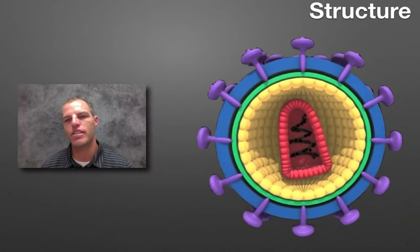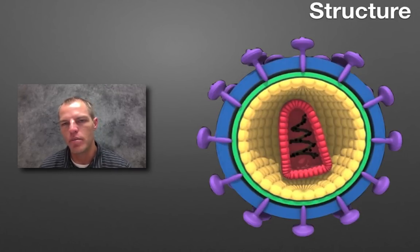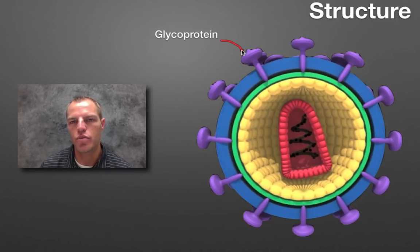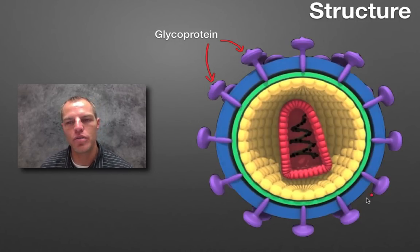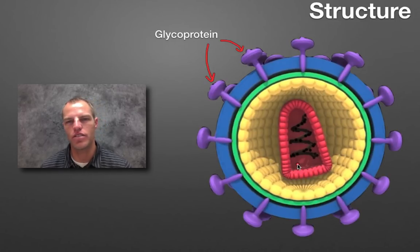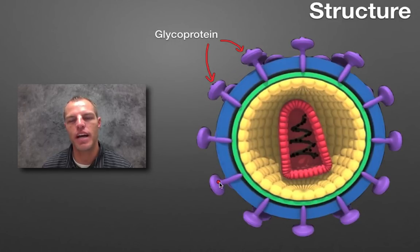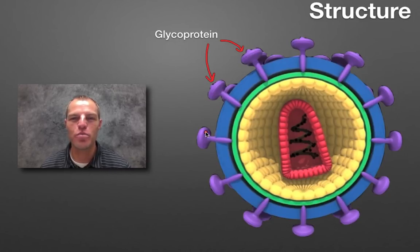This virus here is different — we call this an envelope virus. It's similar to what the flu virus looks like. You'll notice something different: it has these structures called glycoproteins, these little purple spikes. Here is the DNA or RNA, and this red thing is the protein coat protecting it — those are the two main parts. But this one has an extra envelope and these glycoprotein spikes, which allow the virus to attach to certain cells.